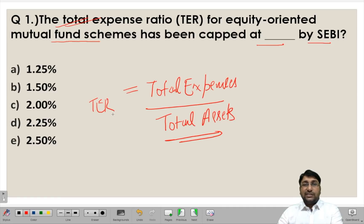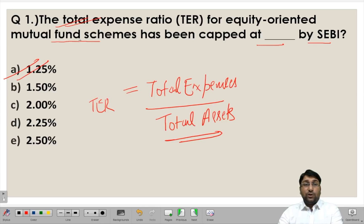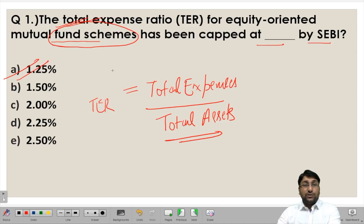The Securities Exchange Board of India has set up a cap or a limit so that the total expenses do not increase beyond that level. The recent percentage that is fixed is 1.25%. We have to be careful that when the question is asking regarding the equity oriented mutual fund scheme, the percentage cap is 1.25%. There are other regulations as well where the equity oriented mutual fund scheme percentage has been changing, and we will have a look at them in the future slides.